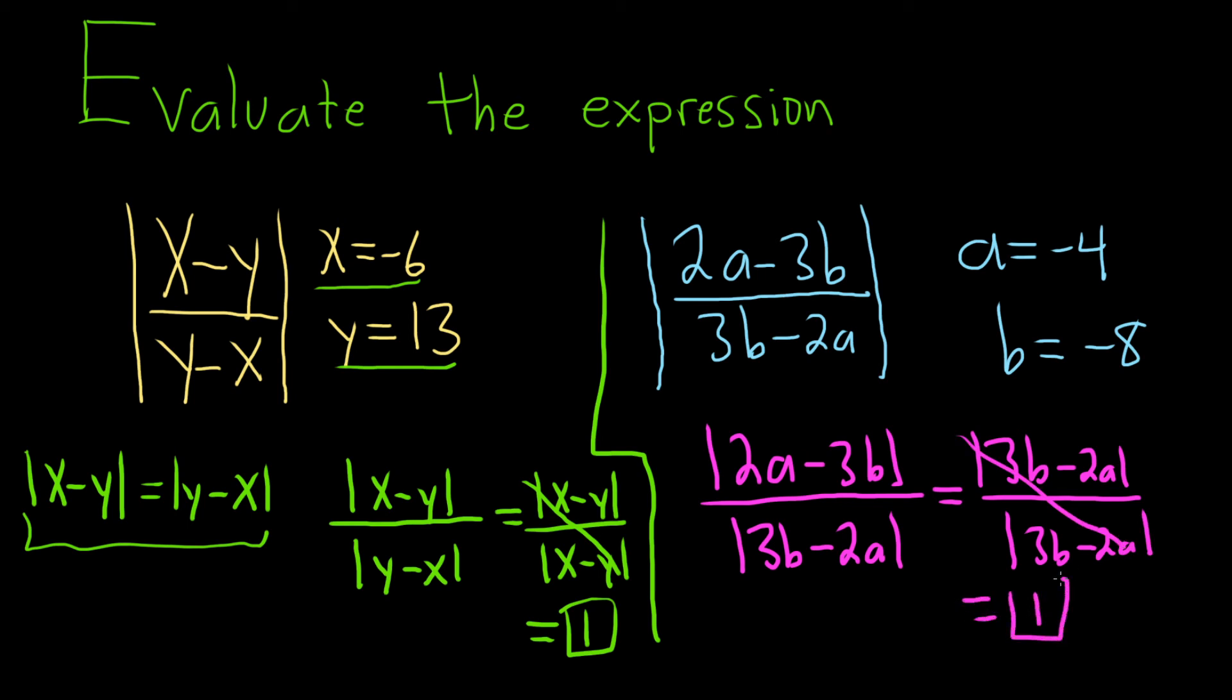In both cases, the answer is 1. Just by using this property, whenever you have something in an absolute value like this, you can switch it. Again, intuitively, the absolute value of x minus y is the distance between x and y. The absolute value of y minus x is the distance between y and x.